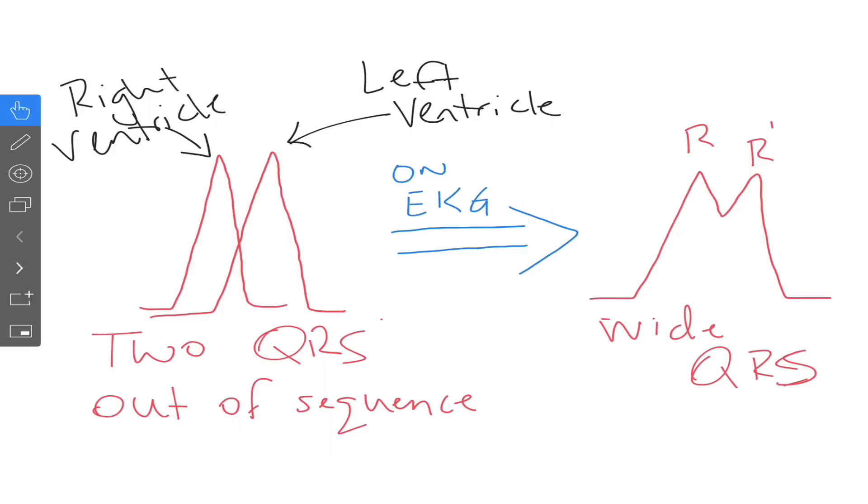You can also recall that the heart does not have just two branches, it actually has three. The left ends up dividing into two fascicles where the right divides up into one.